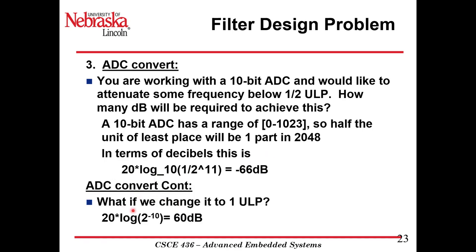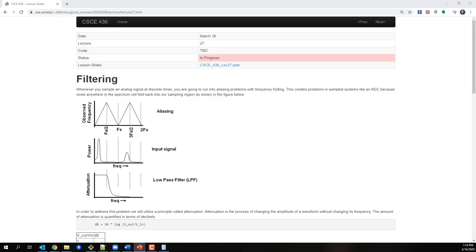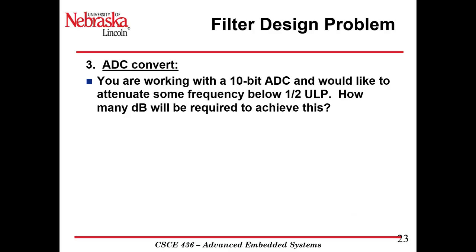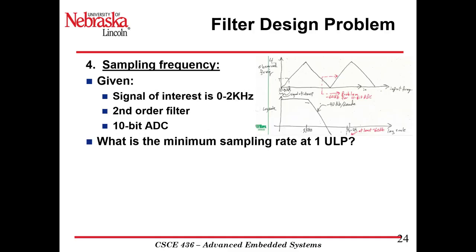What if we changed it to 1 ULP instead of one-half ULP? The unit of least place would be 1 part in 1023, so 2 to the negative 10. Plugging that in, we get minus 60 dB.